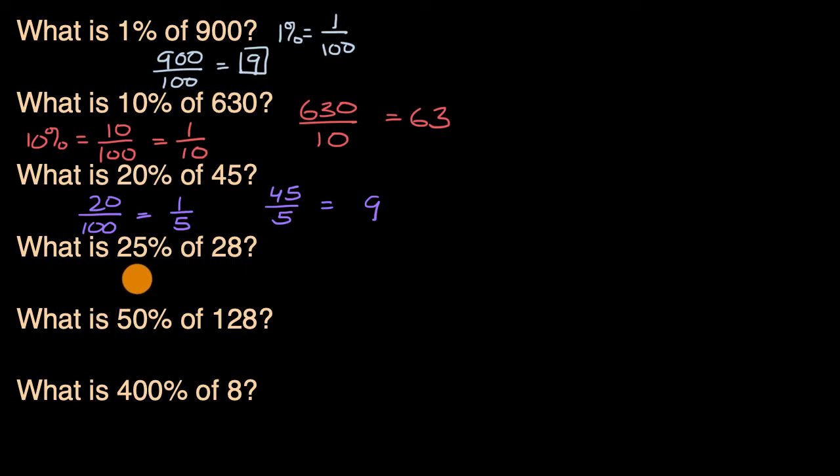Let's keep going. This is too much fun. 25%. You might recognize that's the same thing as one-fourth. 25% is 25 over 100. If you divide the numerator and the denominator by 25, you're going to get one over four. So this is equivalent to saying, what's one-fourth of 28? Well, 28 divided by four is seven.